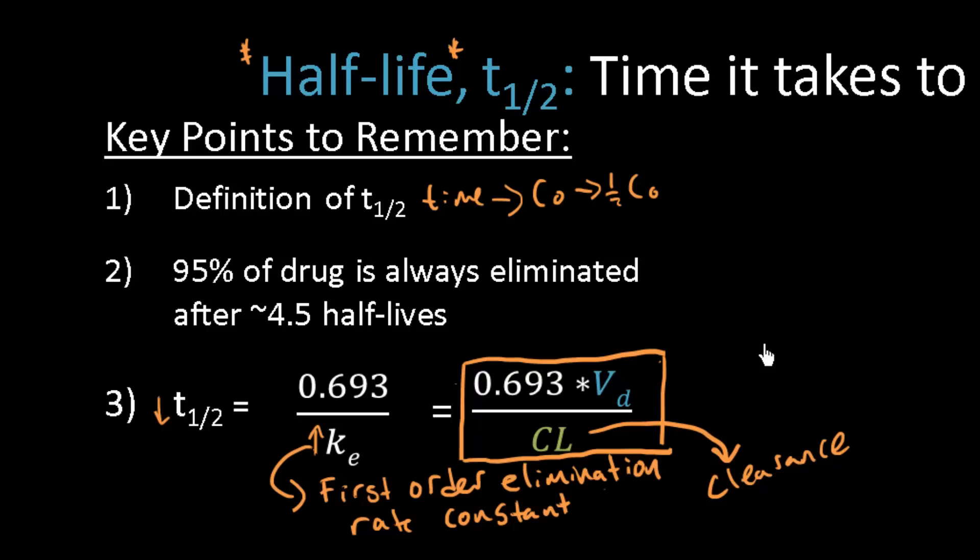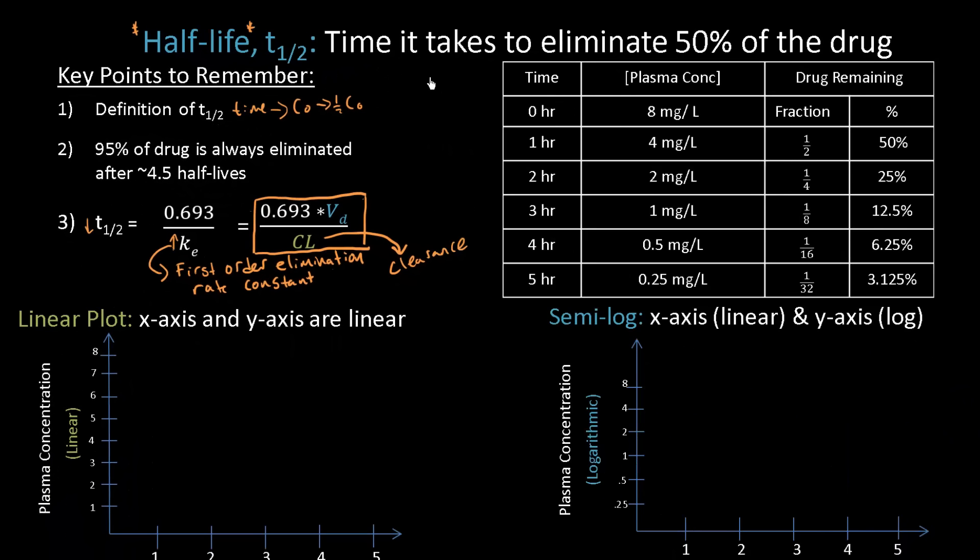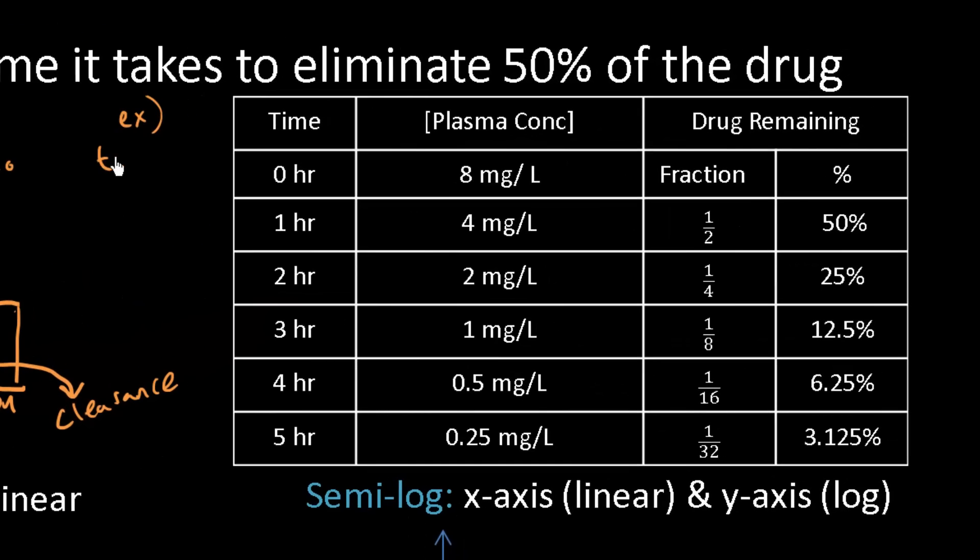So let's work through an example with a table here. So the example that we're going to use is we're going to say that the half-life of the drug is equal to 1 hour and that the initial concentration is equal to 8 mg of drug per liter of plasma. So we'll start off by looking at the left hand side of this table. Notice that the time increment is 1 hour and this 1 hour is the half-life of the drug. So every hour that goes by, we expect the concentration of the drug to decrease by 1 half. So let's look at the plasma concentration. If I started at 8 mg per liter, after 1 hour I expect to be at 4 and after another hour I expect to be at 2 and then at 1 and then at 0.5 and then at 0.25.